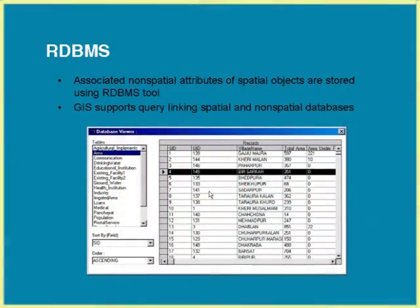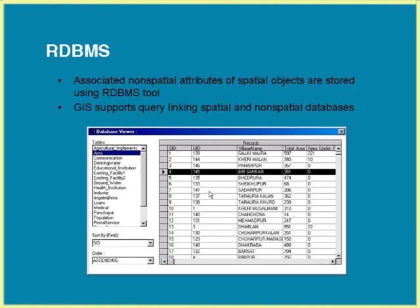After spatial objects, non-spatial attributes come into the picture, where we store non-spatial data using RDBMS tools. Database management system is a software tool that handles tabular data. In GIS, we pull the DBMS tool for handling non-spatial data. There must be a link between your spatial object and the tabular data. If there is a unique ID to your point, that unique ID is stored in the table record, so one can link and query it.